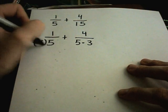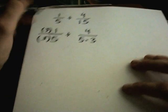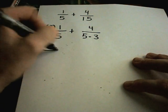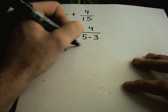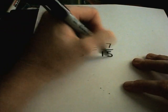That means I have to multiply top and bottom of the left term by 3. I'll get 3 over 15 plus 4 over 15, which is 7 over 15 as we found before.